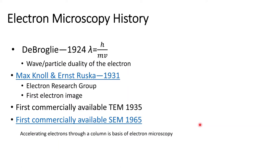When we looked at SEM, we covered electron microscopy history. The big breakthrough was de Broglie in 1924 figuring out the wave-particle duality of the electron — lambda equals h over mv, or lambda equals h over momentum. If you want to see the derivation, look back at the SEM lectures.